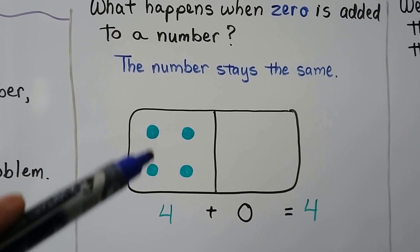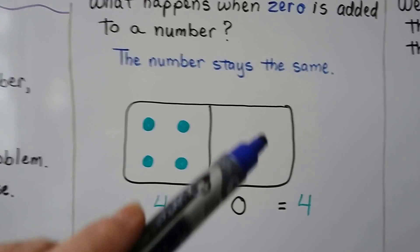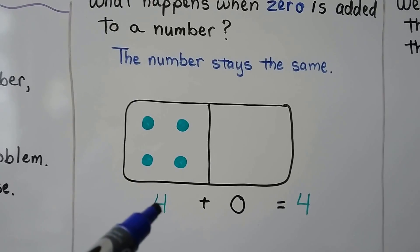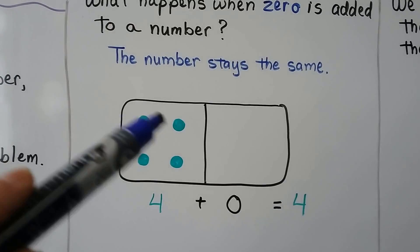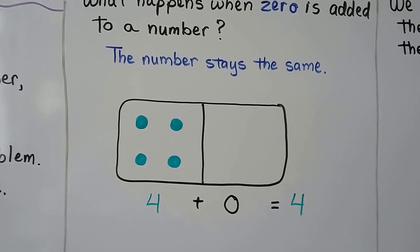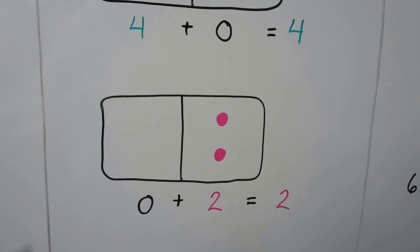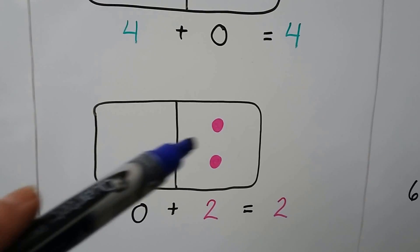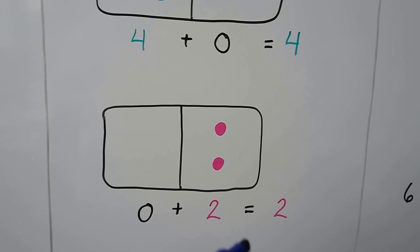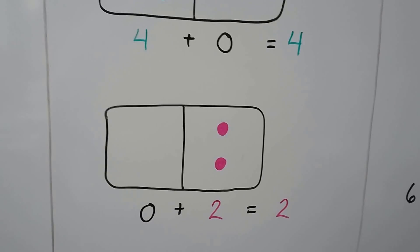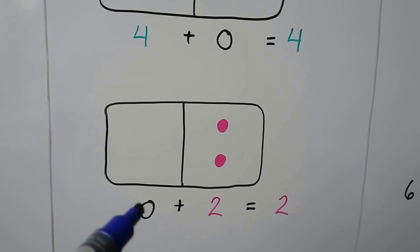Here we have four green dots and zero dots. Four plus zero is equal to four — the four stays the same. Here we have zero dots and two dots. Zero plus two is equal to two. The two stays the same when zero is added to it.